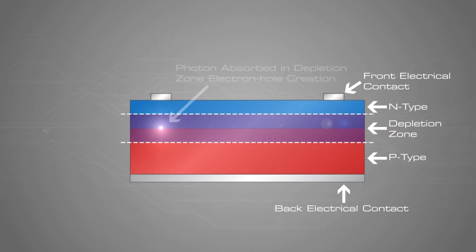When a photon of light is absorbed by one of these atoms in the N-type silicon, it will dislodge an electron, creating a free electron and a hole. The free electron and hole have sufficient energy to jump out of the depletion zone.